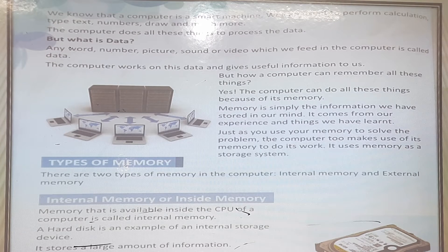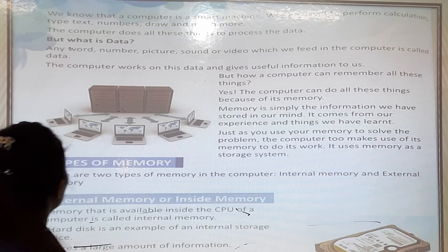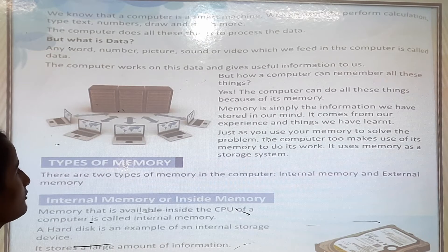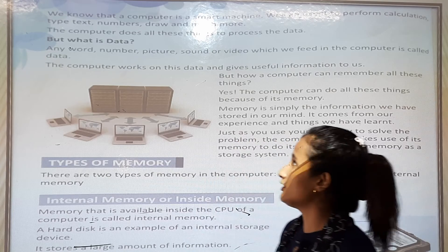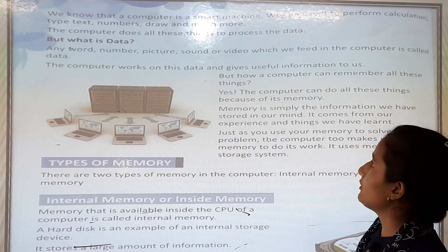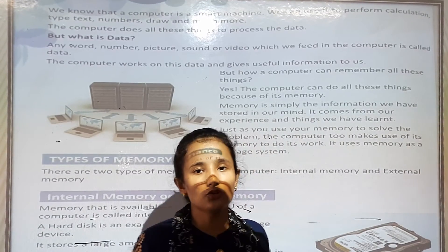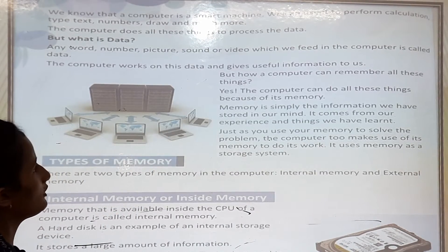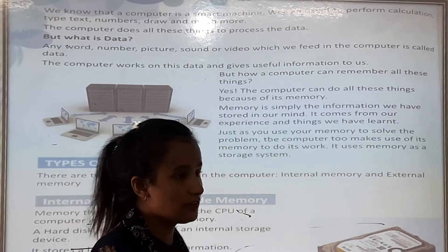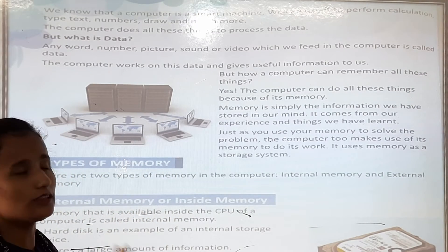The computer does all these things to process the data. But what is data? Any word, number, picture, sound, or video which we feed into a computer is called data. The computer works on this data and gives useful information to us. For example, when we upload pictures, that is data, and the computer gives us useful information from it.